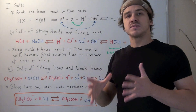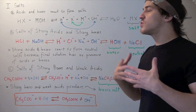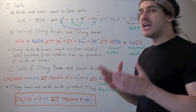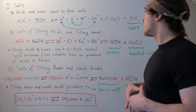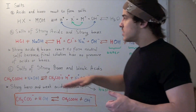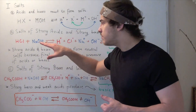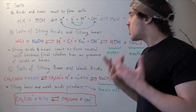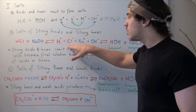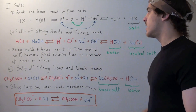Different types of salts exist. Let's see what types are formed when strong acids react with strong bases. To illustrate this, a strong acid — hydrochloric acid — and a strong base — sodium hydroxide — dissociate to form an H+ ion, a chloride ion, a sodium ion, and a hydroxide ion.